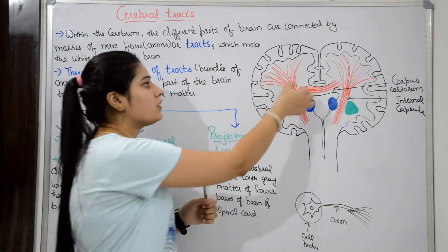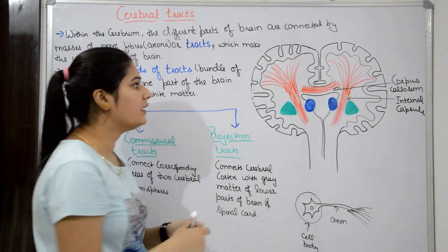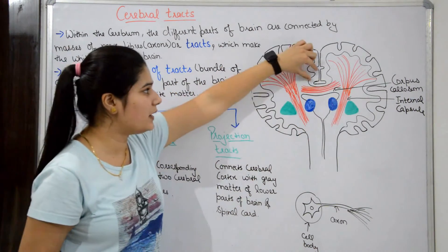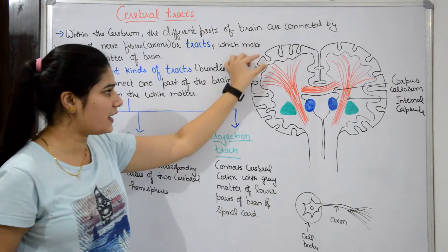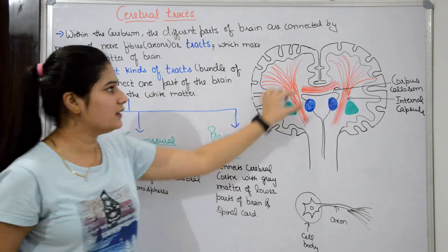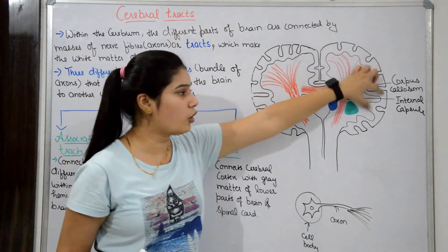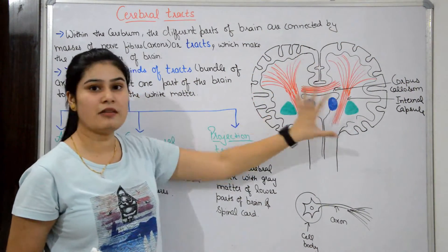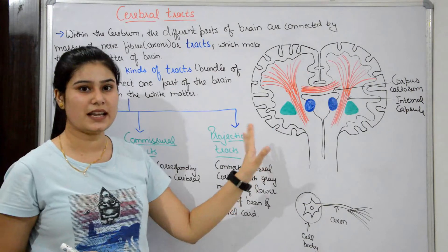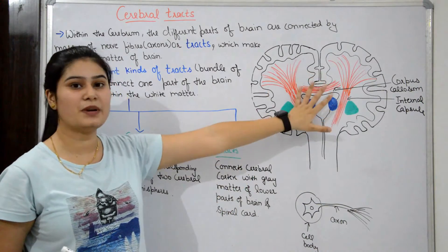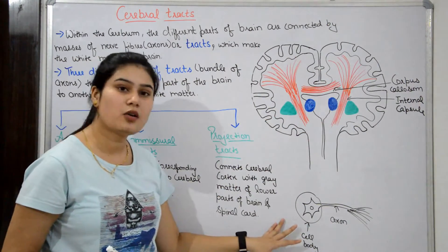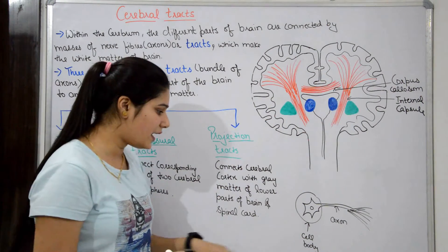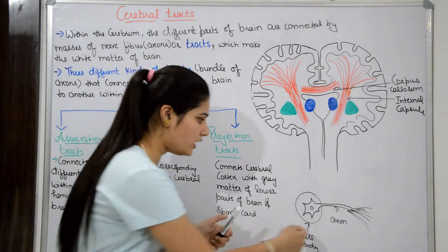This is the outer cortex — this is the rim, this is the outer cortex. And the inner is white matter. So the outer cortex is made from the cell body.